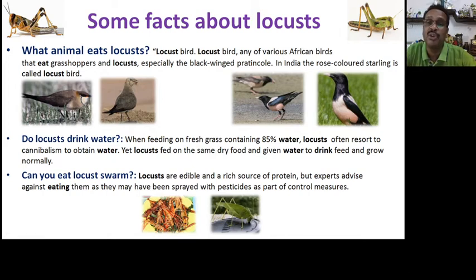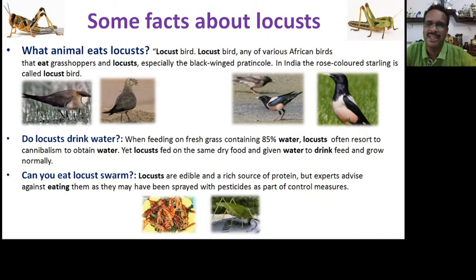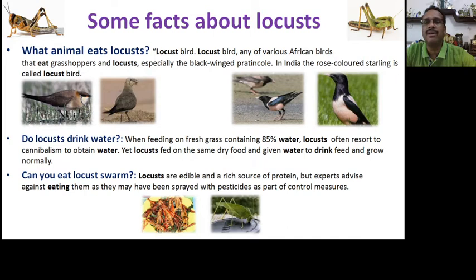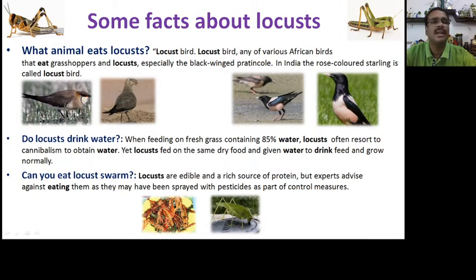In this presentation I want to share some facts that people really don't know. Do you know what animals are called locusts? There are certain birds named after locusts — any of various African birds that eat grasshoppers and locusts, especially the black-winged one. In India, the rose-colored starling is also called a locust bird.